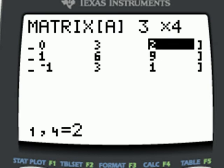So let's exit the matrix edit menu, second quit. Now remember to put the matrix into reduced row echelon form.